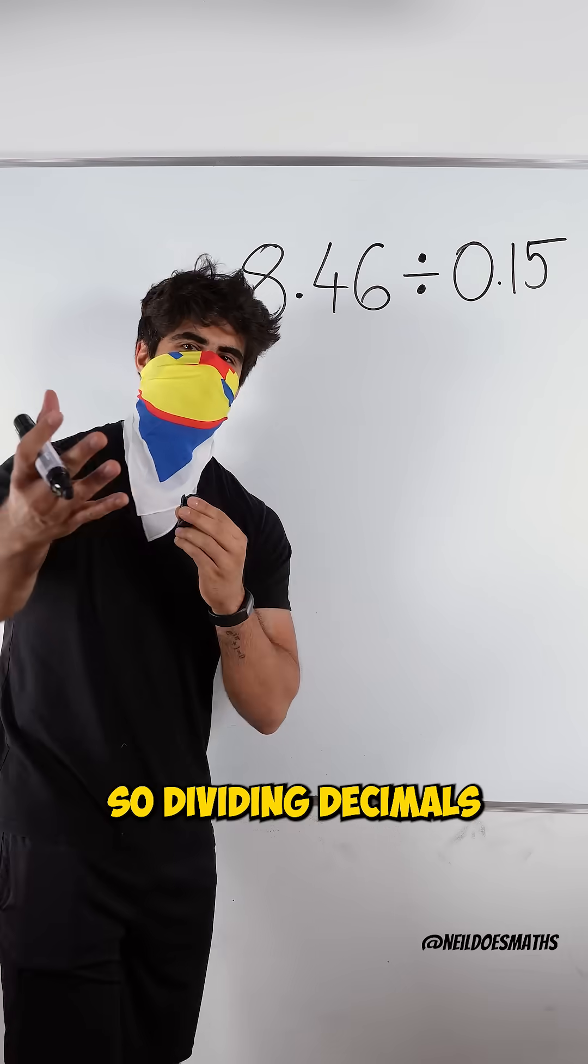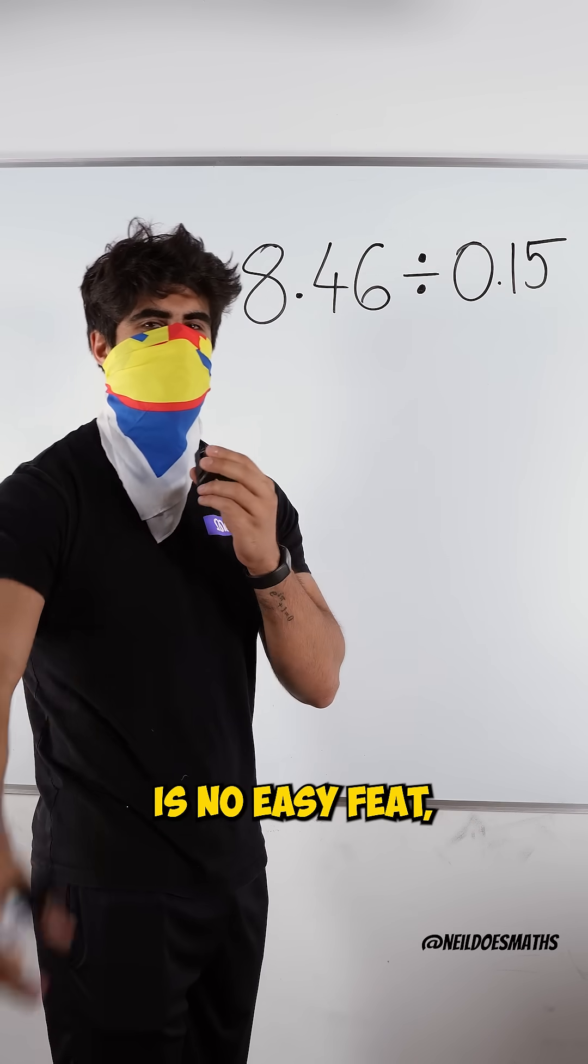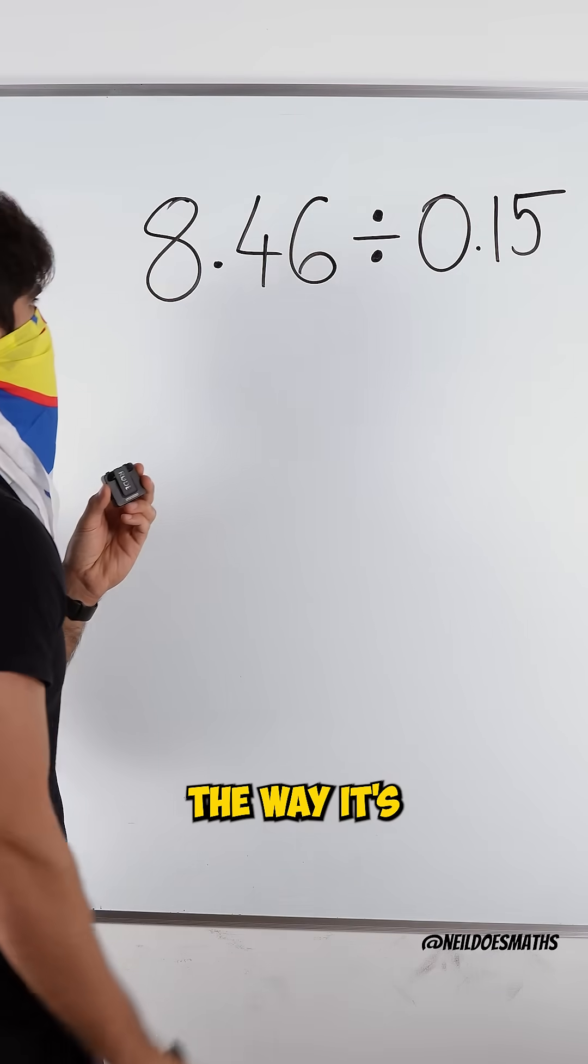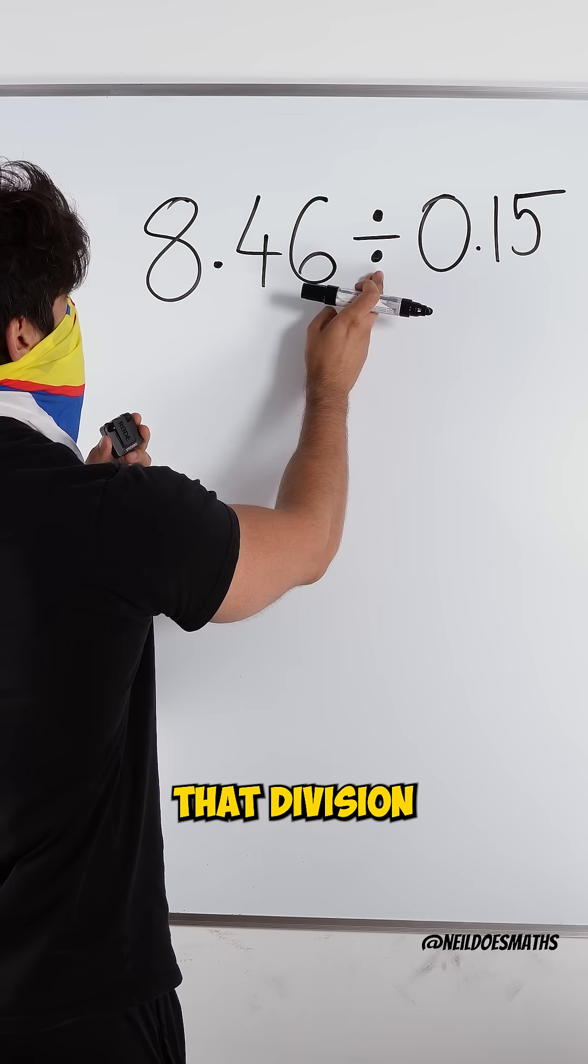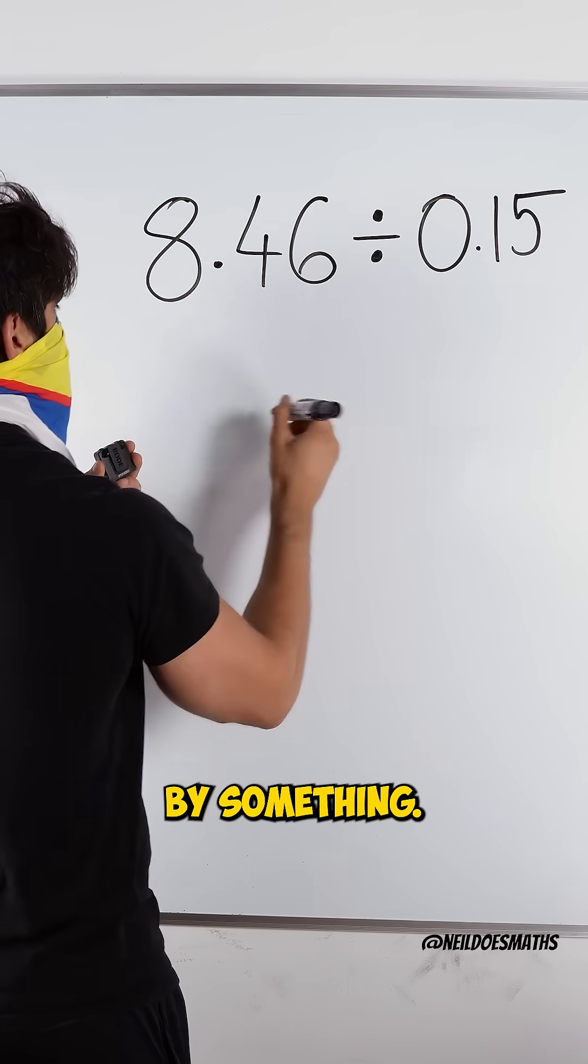Let's take a look. So dividing decimals by decimals is no easy feat, but we can change the way it's written by remembering that division just means fraction. Something divided by something.